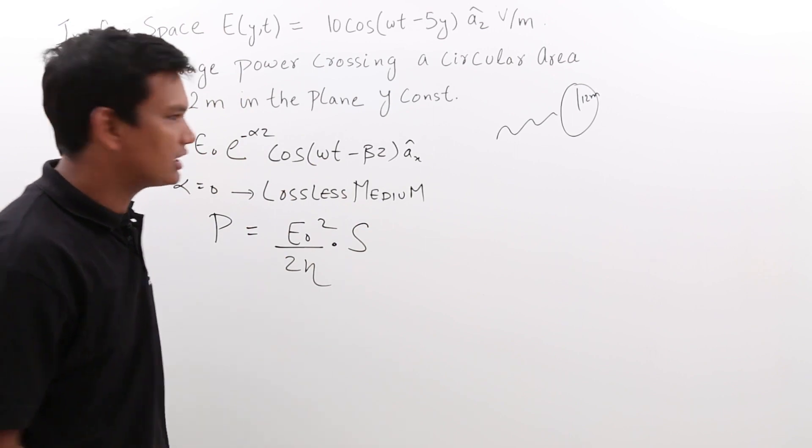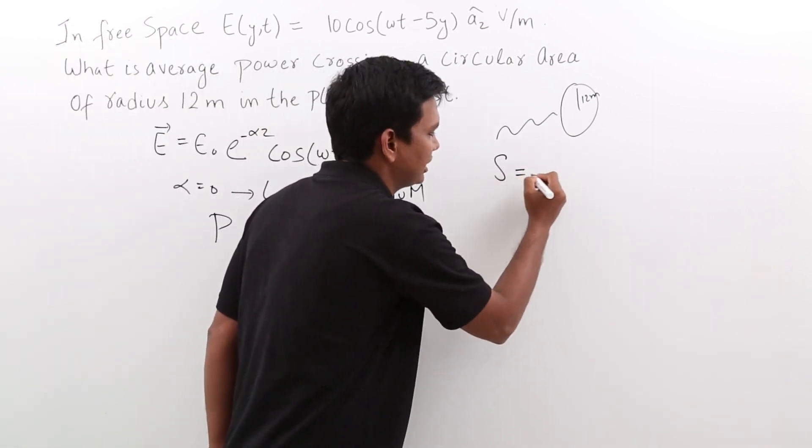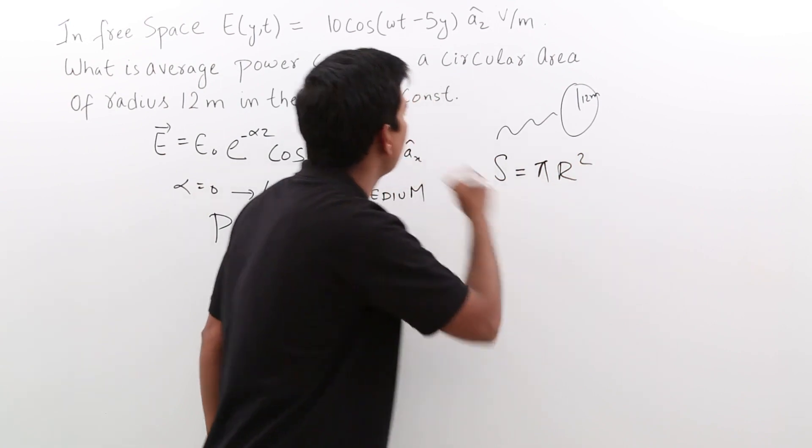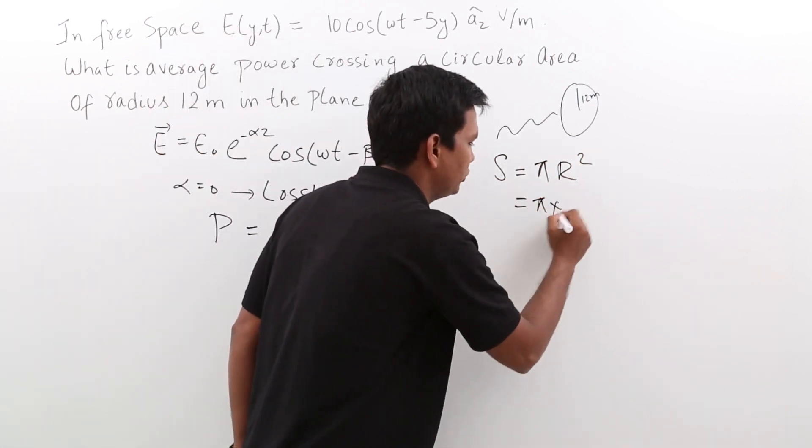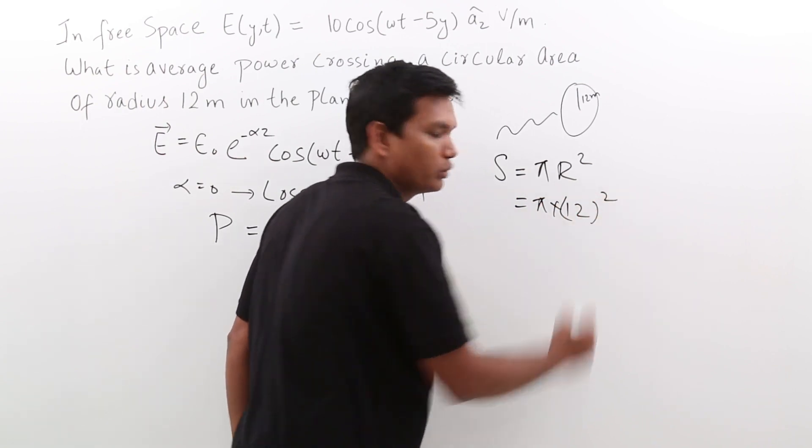What would be the area of a circle? The area of a circle would be nothing but πr². What is r in this case? It is 12 meter. So, it would be π into 12². This would be my S.